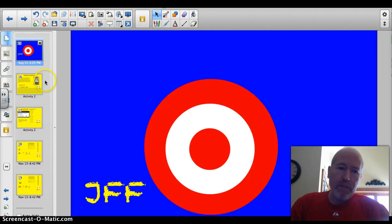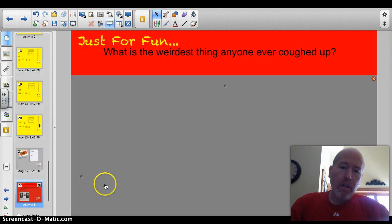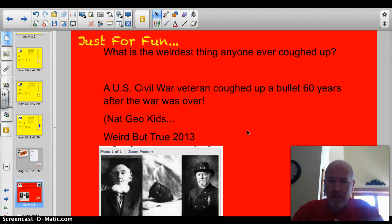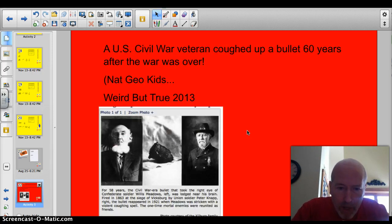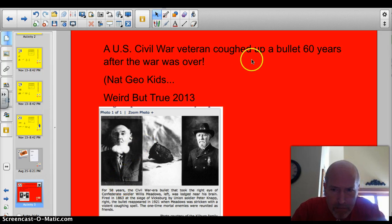What's the weirdest thing anybody's ever coughed up? Actually, it was a bullet. This is weird. U.S. Civil War veteran coughed up a bullet 60 years after the war was over. Apparently, this guy here got hit by a bullet that ricocheted. It was lodged in his brain for 50 years and then he has a coughing fit and he coughs up a bullet. That was the bullet. Like I said, disgusting, but how weird is that? All right. Have a good night. Thanks for listening. Bye.